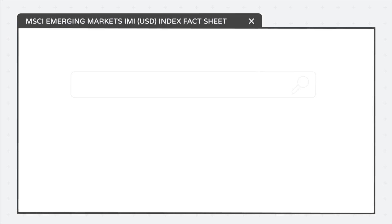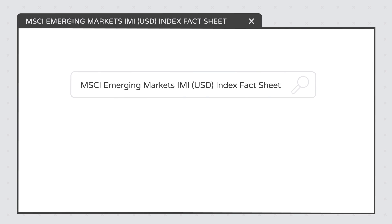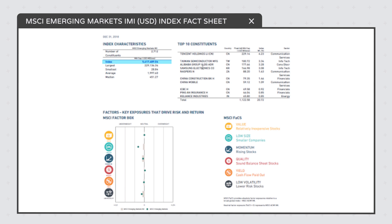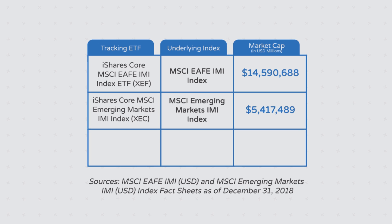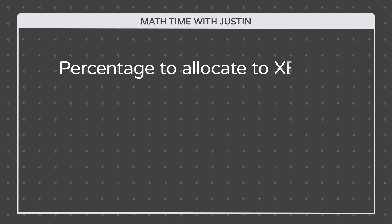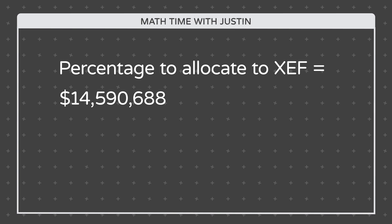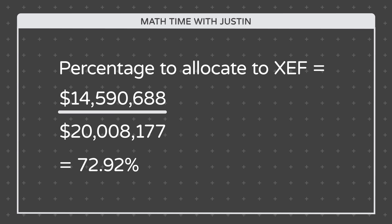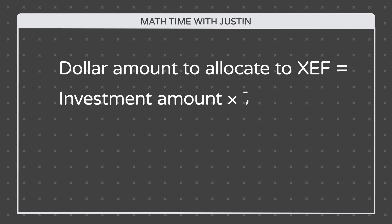Follow the same process for XEC's underlying index, the MSCI Emerging Markets IMI Index. Based on its December 31st, 2018 index fact sheet, we find that its market cap in USD was $5,417,489. Now for some math. The total combined market cap of the MSCI EAFE IMI Index and the MSCI Emerging Markets IMI Index is $20,008,177. Dividing the MSCI EAFE IMI Index market cap of $14,590,688 by the $20,008,177 total combined market cap gives us 72.92% — the approximate percentage to allocate to XEF.